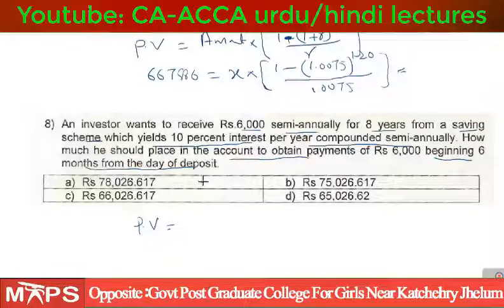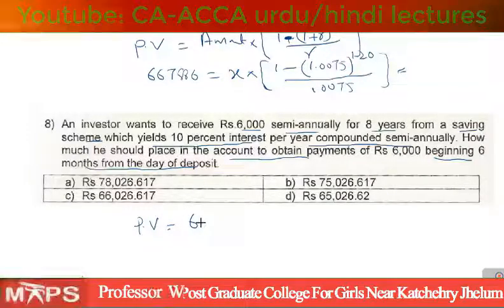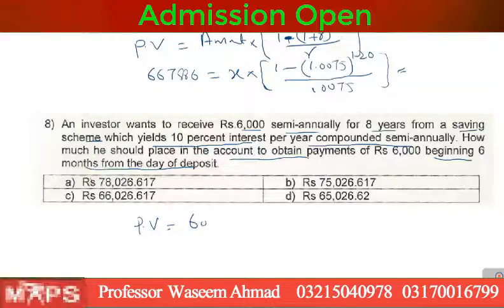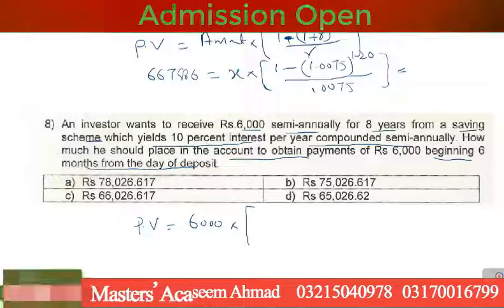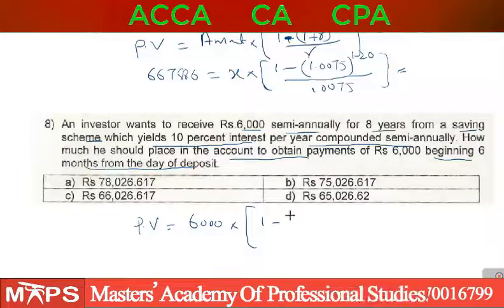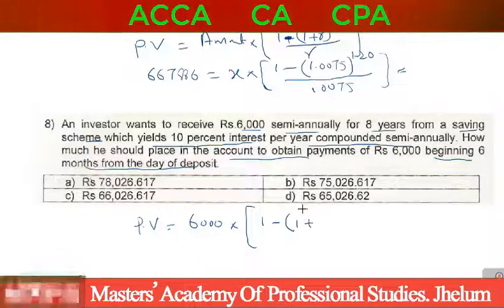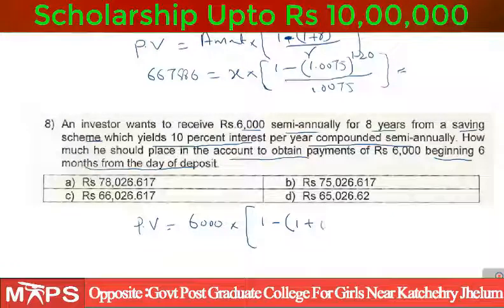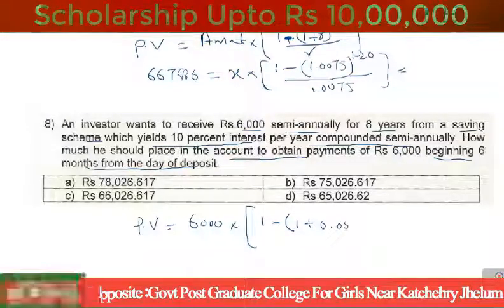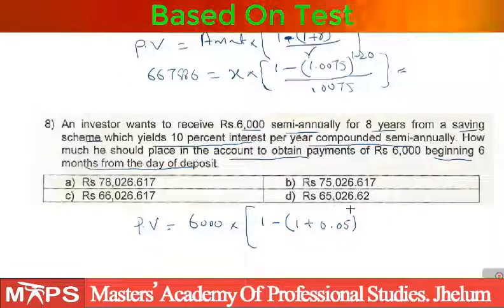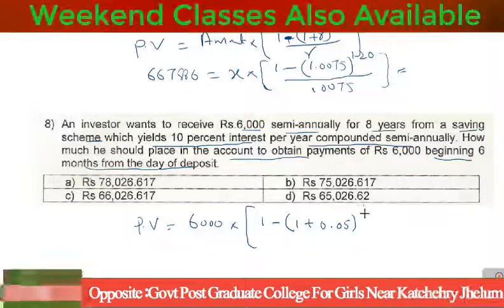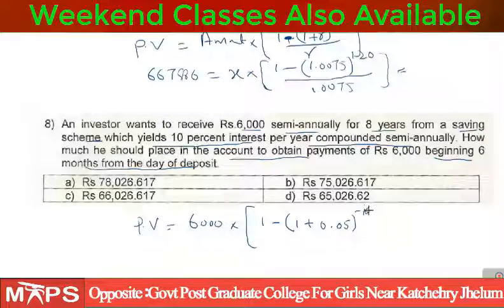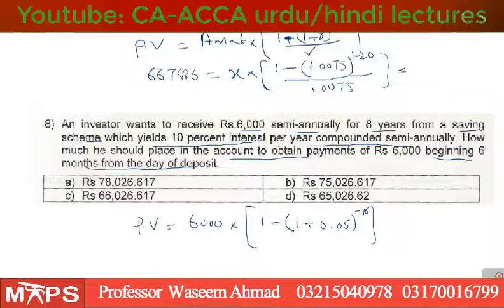So this is an ordinary annuity. The present value formula is: PV = 6,000 × [1 − (1 + R)^(−n)] / R. R is 10% per annum, but since compounding is semiannual, the rate per period is 5% (0.05). In 8 years, there are 16 semiannual periods, so n = 16.